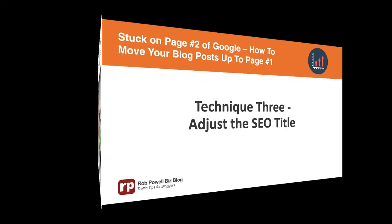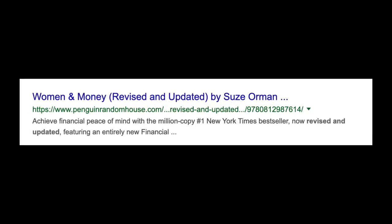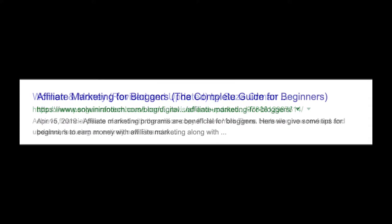Technique 3: Adjust the SEO title. Look closely at your SEO title and see if you can implement any of the following. 1. Add parentheses — they make your SEO title stand out. For example: 'revised and updated,' or 'the complete guide,' or '7 steps.' 2. Insert the current year. When people scan page 1 of Google, they naturally want the most up-to-date information.